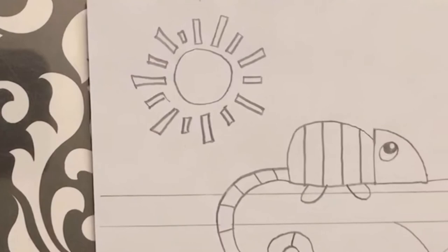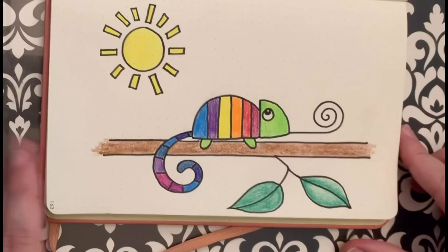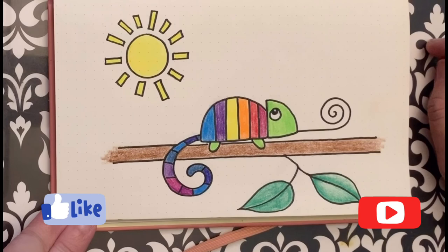So we've got a chameleon hanging out on a branch with some leaves and a sun. And I'll show you what it looks like after you've outlined it with a black pen and then colored it in nicely with a lot of color. I used colored pencils, but you could use anything for this. All right, guys, hope you had fun. Stay safe. See you soon. Bye.